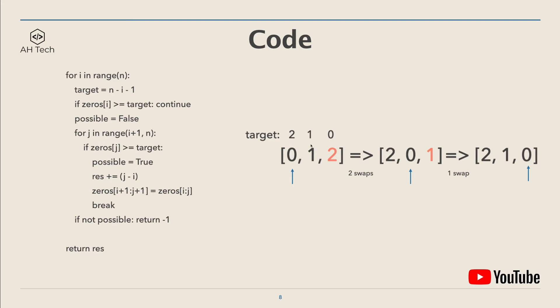When you are swapping and moving, for example, 2 into the first index 0, it's kind of like pushing the subarray [0, 1] one step right. So we can do zeros array i to j plus 1 equals zeros array i to j. And then we will break the inner loop.